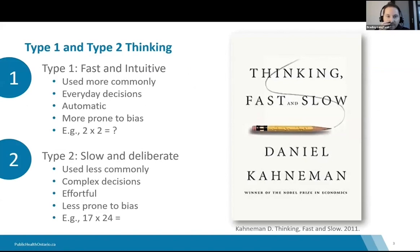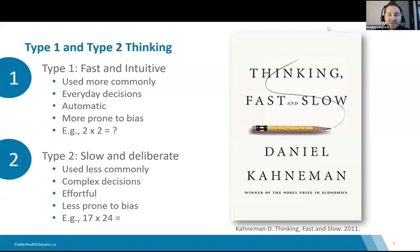To set the stage, we need to talk about thinking fast and slow — type 1 and type 2 thinking. Dr. Daniel Kahneman wrote this book in 2011. He's a Nobel Prize-winning psychologist and economist, and he posits that there are two different modes to the way humans think: type 1, which is fast and intuitive, and type 2, which is slow and deliberate. We spend a lot of time in type 1 because it's more efficient, but it involves making shortcuts called heuristics. When those shortcuts result in incorrect assumptions, they're called biases — cognitive biases.